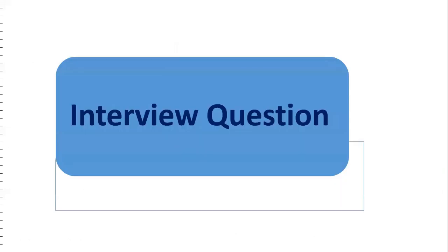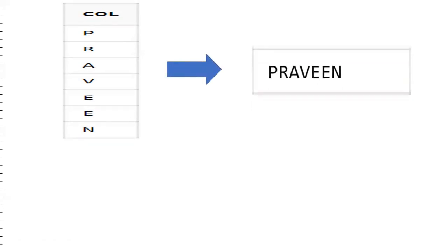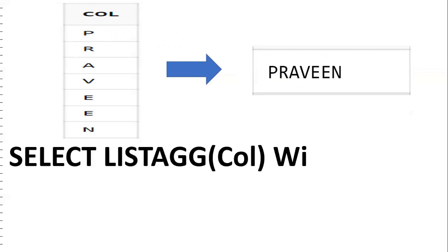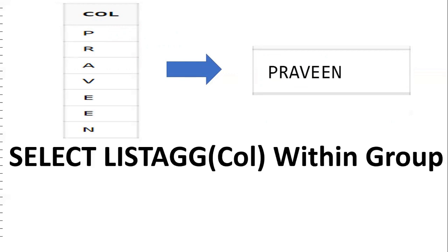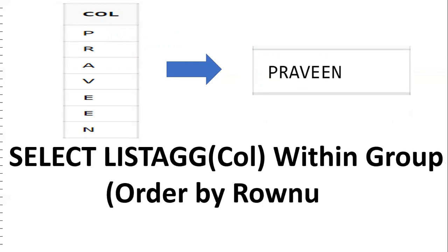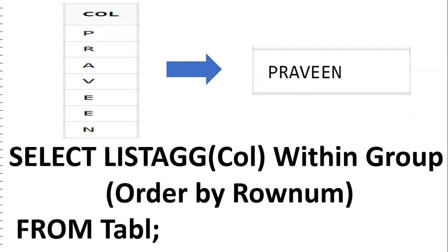Now let's see one interview question based on LISTAGG. If you have a table where data is stored vertically — for example P, R, A, V, E, N — and you want to display it horizontally, this can also be achieved using the LISTAGG function: LISTAGG(column) WITHIN GROUP ORDER BY rownum. This is one of the important interview questions asked about LISTAGG.